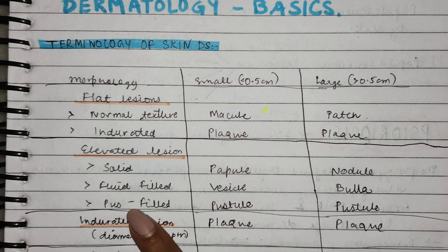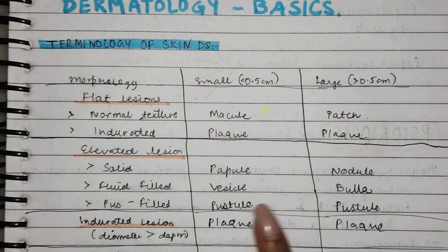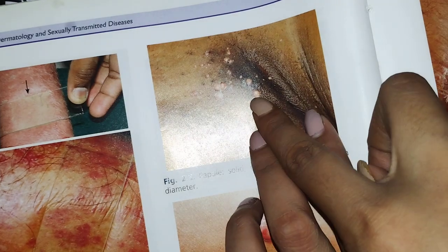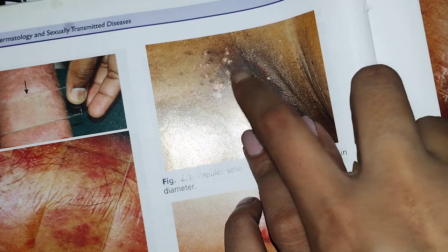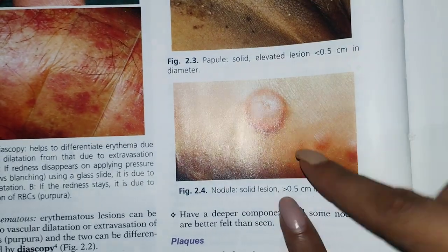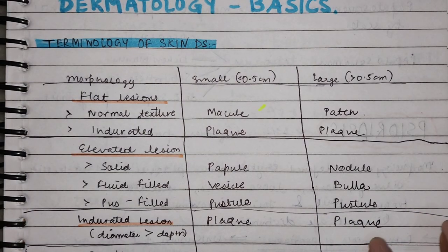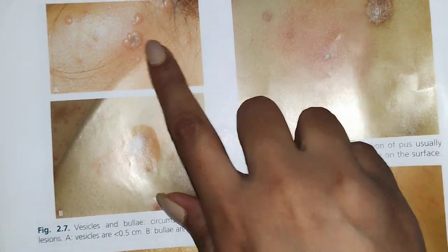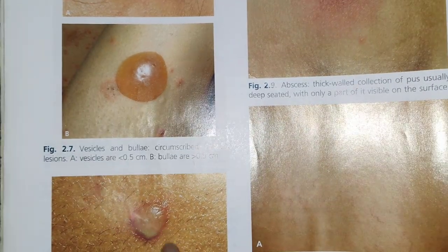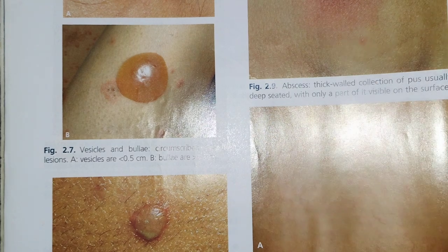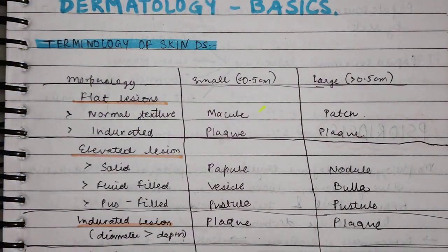Similarly, if pus has formed — like in acne — it is called pustule; if it is large, it is also called pustule. You can see in the photos: the small size is papule, and the big size we call nodule. You can see all this difference. For vesicles, they are small; if large, it is a big bulla formation. Under it, a pus-formed mass is a pustule. So you have read two to three common terminology. If there are indurated lesions, it is also a plaque.